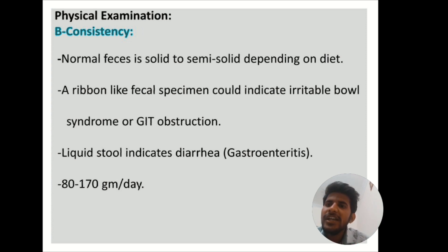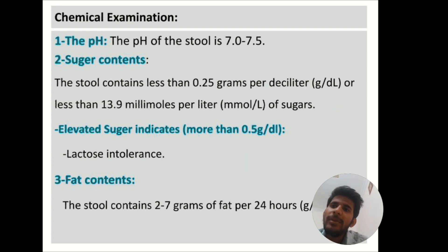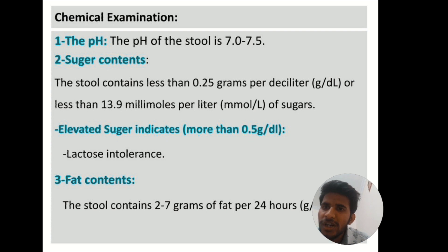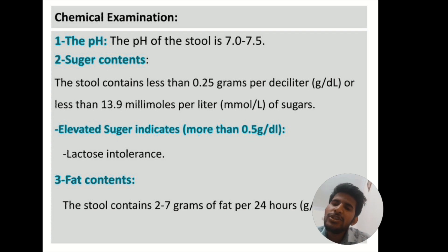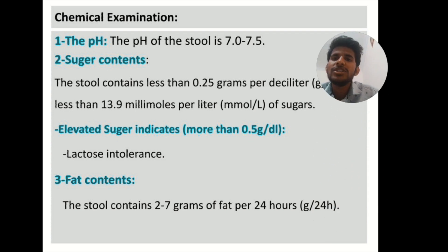The normal amount of stool is 80 to 170 grams per day — you can say 100 to 200 grams per day. In chemical examination, the pH is nearly 7 to 7.5, which is neutral. The stool contains 0.25 grams per deciliter of sugar. Elevated sugar indicates lactose intolerance, which is due to the absence of certain enzymes that prevent digestion of lactose sugar.